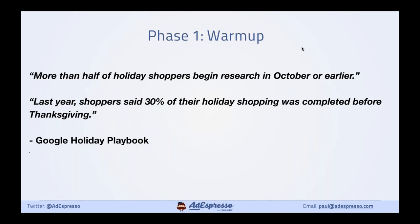From the Google Holiday Playbook, research shows that about half of shoppers have begun their research in October or earlier — that's why we need to be planning now. And last year, about 30% of holiday shopping was completed before Thanksgiving. The sooner we start the better. I've already been quite organized this year, spreading out purchasing myself.